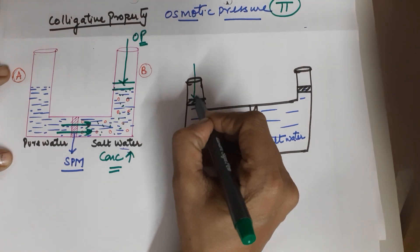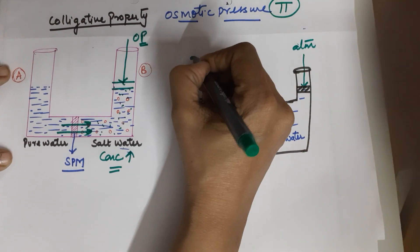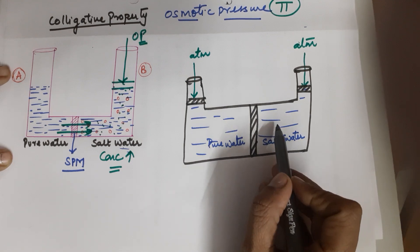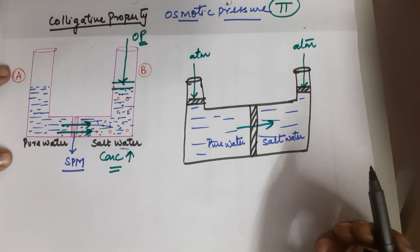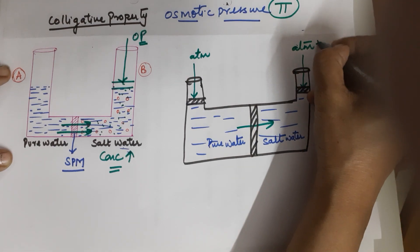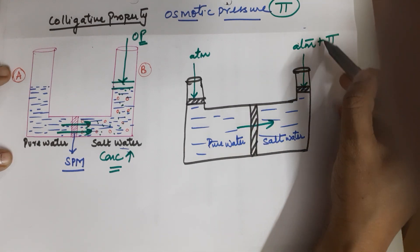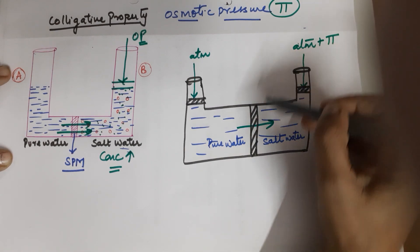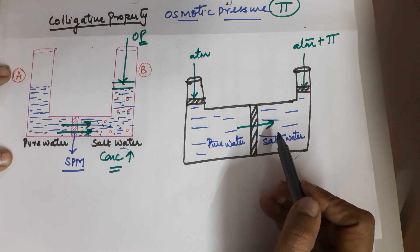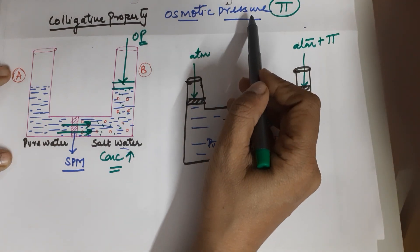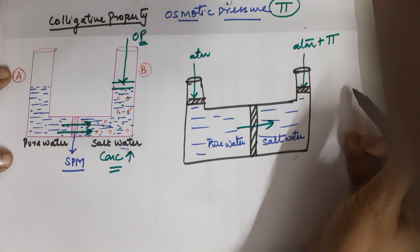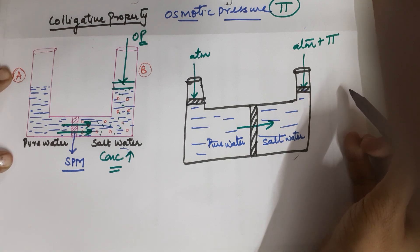On both sides the pressure is atmospheric pressure as of now, because osmosis has not started. When osmosis begins, water passes through the semi-permeable membrane from lower concentration to higher concentration, so water moves towards the salt water side. Osmotic pressure is defined as the minimum amount of pressure applied on the side of the solution to stop the flow of water through the semi-permeable membrane.